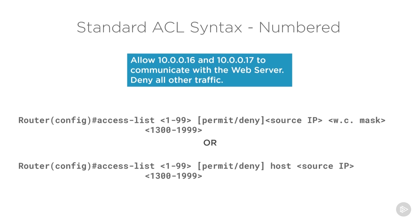We also have the numbered ACL option. The syntax is very similar, but instead of entering a sub-configuration mode, we just create the command using 'access-list' followed by a number between 1 and 99 or 1300 to 1999 — those ranges are reserved explicitly for standard access control lists. After the number, we issue permit or deny, then the source IP address and wildcard mask.